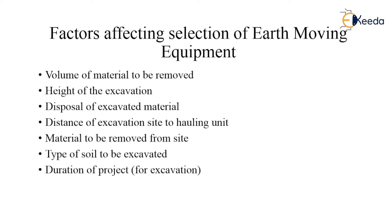Now, what are the factors that affect the selection of proper earth moving equipment? The very first factor is the volume of material to be removed. This is very important as it determines what type of equipment is to be used — the volume of earth, where the material here is the earth itself.